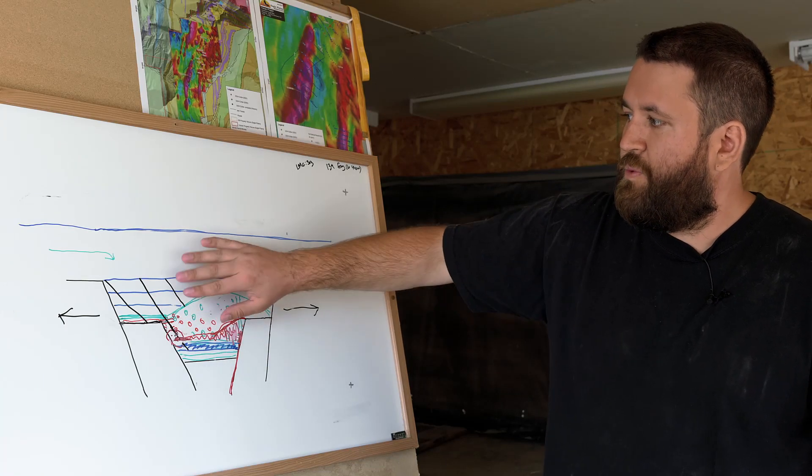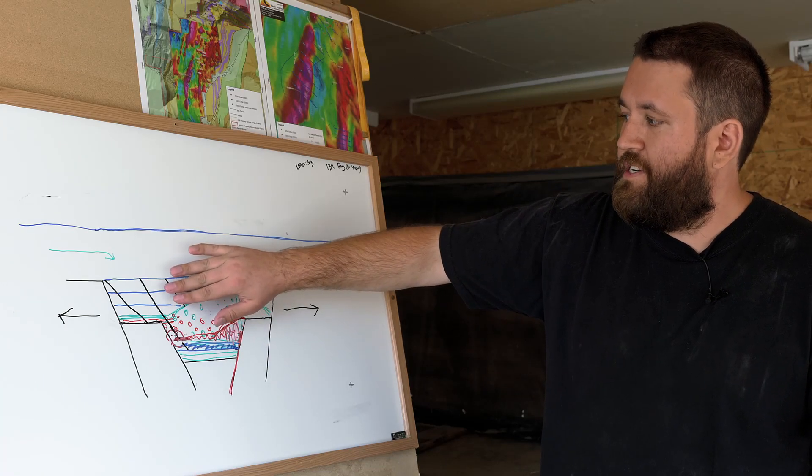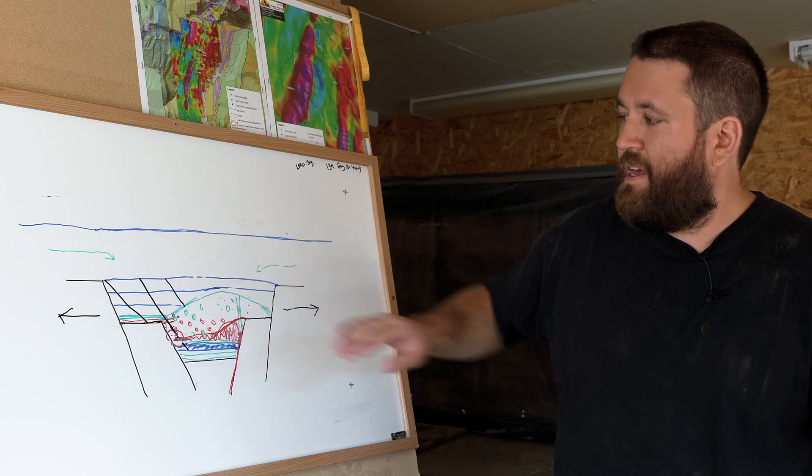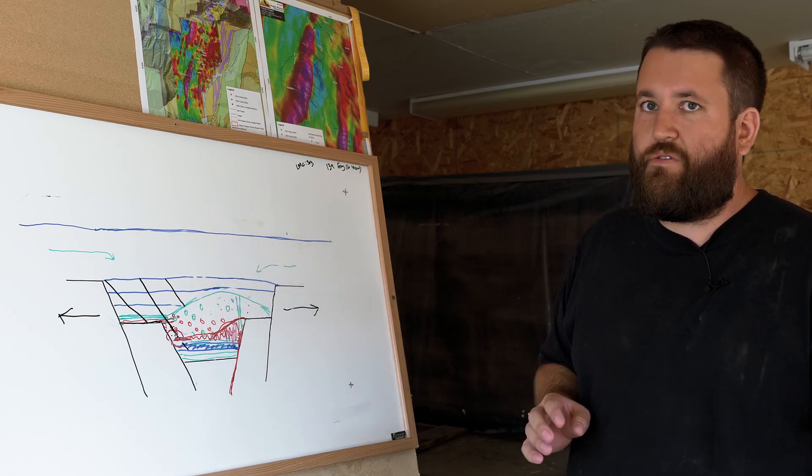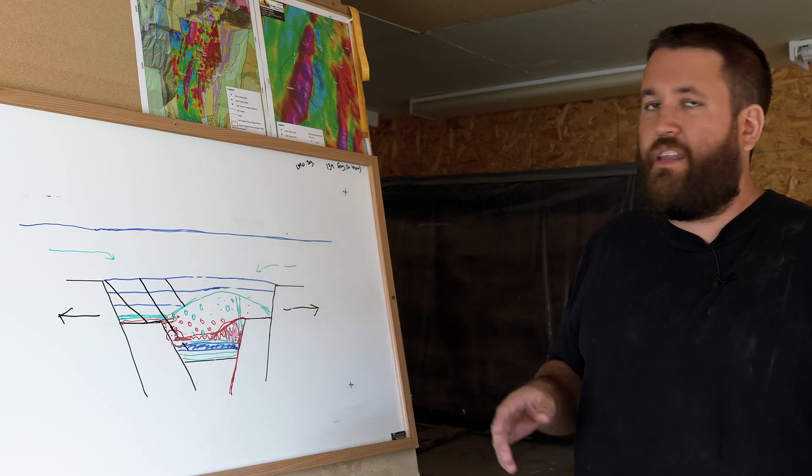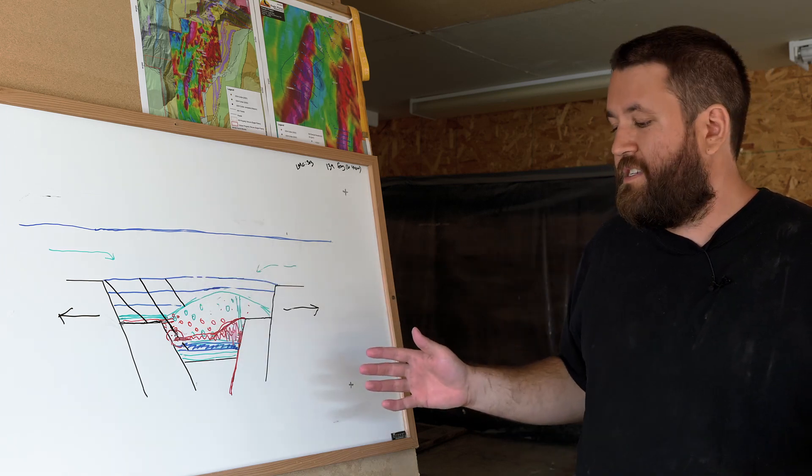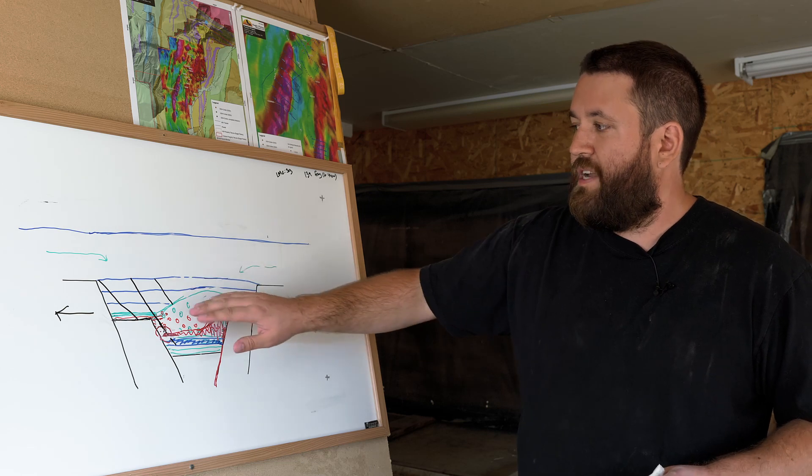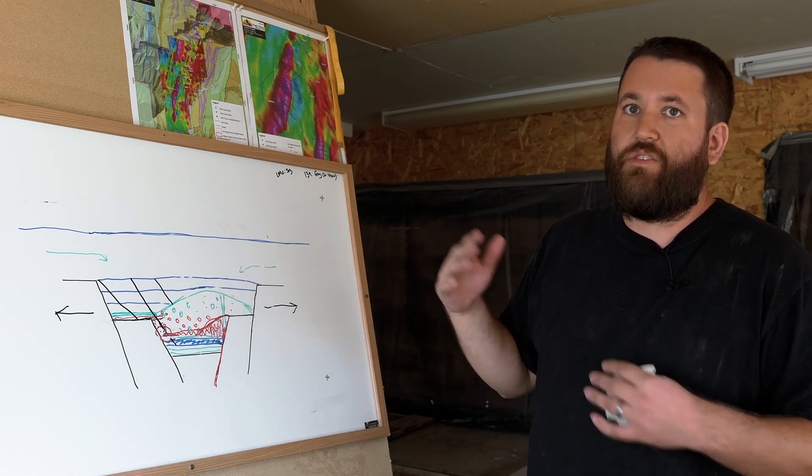The hole intersected the lower middle contact between thick and medium bedded middle Aldridge and thin bedded and fragmental lower Aldridge at around 303 meters. This transition is quite subtle from the thicker to thinner beds. It happens over about four core boxes. The transition itself is very important as it marks the top horizon of the Sullivan time.